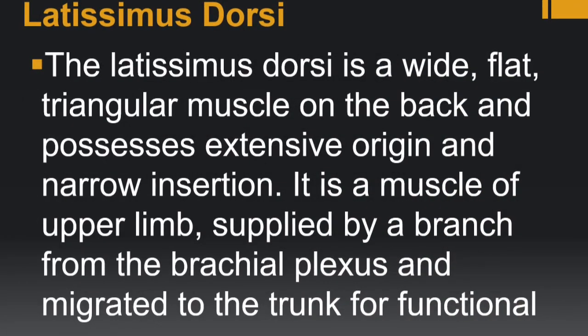Moving to the next muscle: the upper part of the back is occupied by trapezius, and the lower part by latissimus dorsi. Latissimus dorsi is a wide flat triangular muscle on the back. It has an extensive origin but a narrow insertion, whereas trapezius has both an extensive origin and an extensive insertion. Latissimus dorsi is a muscle of the upper limb supplied by a branch of the brachial plexus, and it has migrated to the trunk for functional reasons.